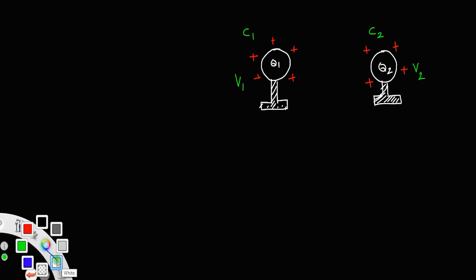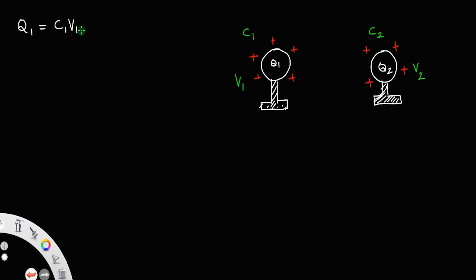By the relation of charge, capacitance, and voltage, we have q1 equal to c1 times v1. Also, q2 is equal to c2 times v2 — capacitance times potential gives the charge.